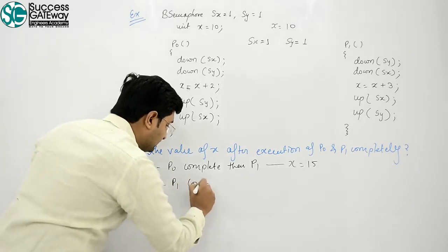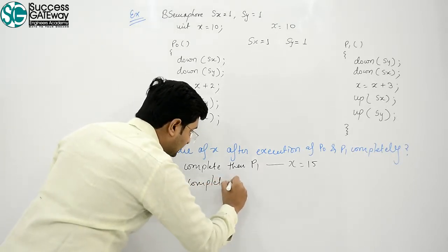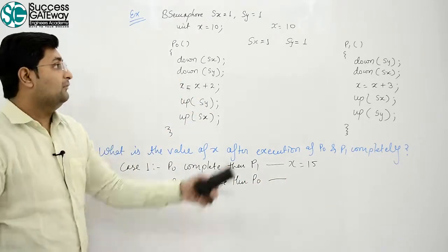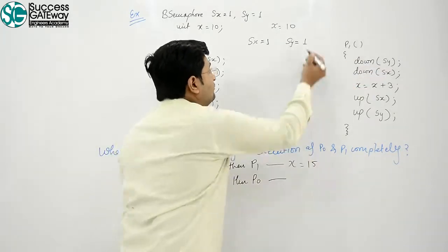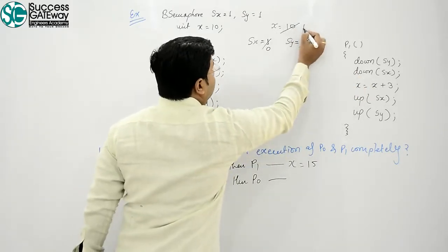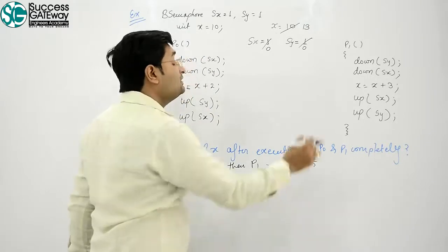Then P0. Now Sy value down, Sx value down, x value is x plus 3, which is 13. Sx value up, Sy value up.